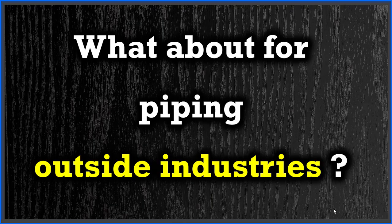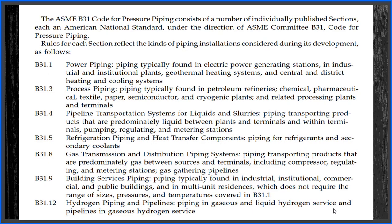Now you must be asking about piping standards outside the scope of B31.3. ASME B31 is a committee with a list of standards for different industrial purposes. Major codes include B31.1 for power piping, B31.3 for process piping, B31.4 for pipeline transportation, B31.5 for refrigeration piping, B31.8 for gas transmission, B31.9 for building services, and B31.12 for hydrogen piping. Each is used for specific services, but B31.3 is specifically for process piping as classified in clause 300.1.1.